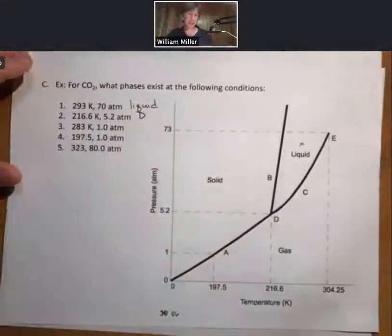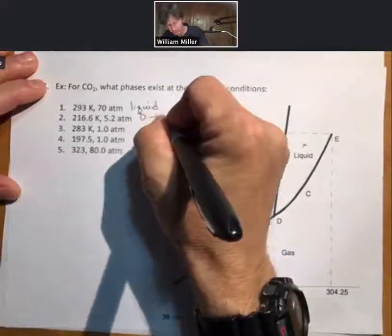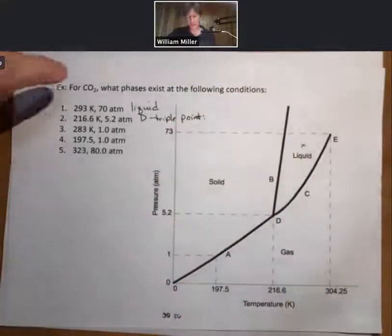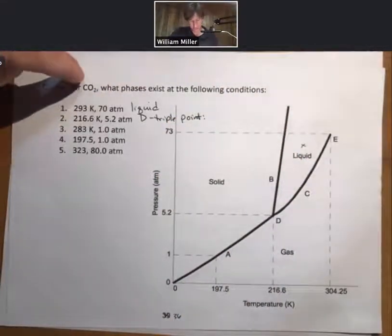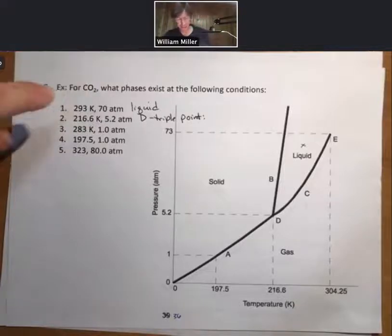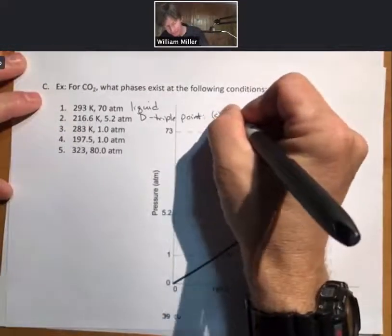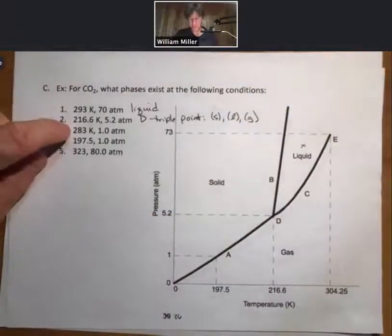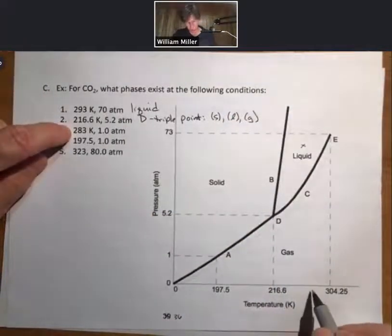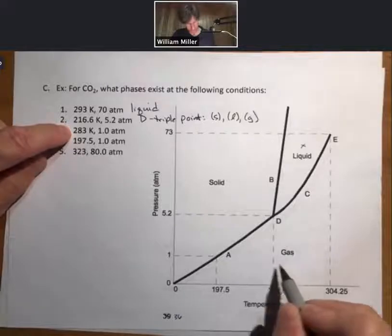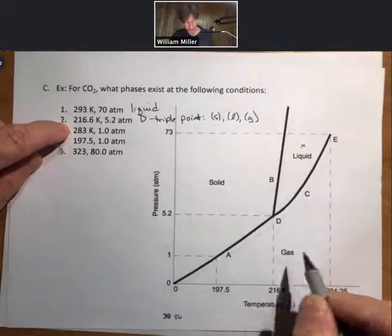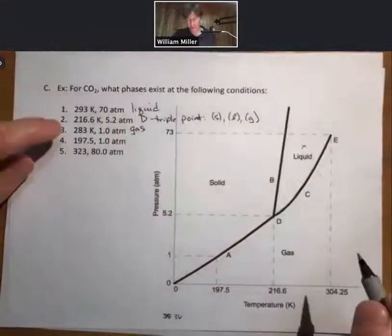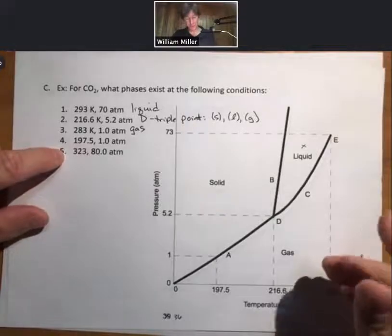Which is the triple point. Question though says what phases exist. It would be solid, liquid, and gas H2O. 283, one atmosphere—one atmosphere, 283 is going to be in the gas phase. Etc., etc. I'll leave the last two for you to do.